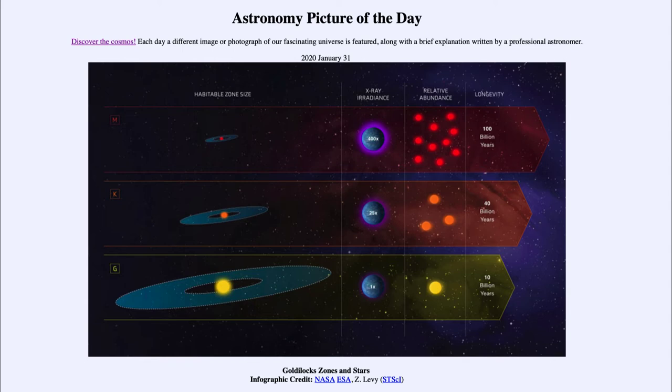So on the top for a very small, what we call an M-type star, the Goldilocks Zone is very small and is very close to the star. For a star like the sun on the bottom, a G-class star, the Goldilocks Zone is much larger and is a little further away from the star.